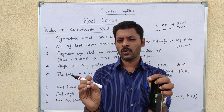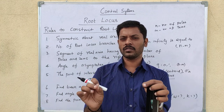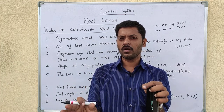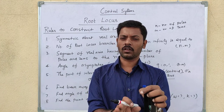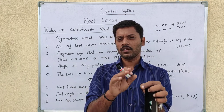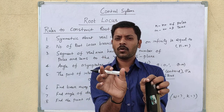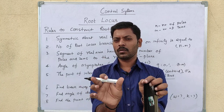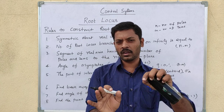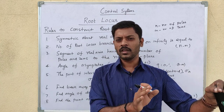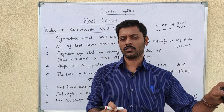If there are an odd number of poles and zeros to the right side, the point is on the root locus. If there are an even number of poles and zeros to the right side, it is not on the root locus. You have to select the segment where there is an odd number — that is the segment on the root locus.